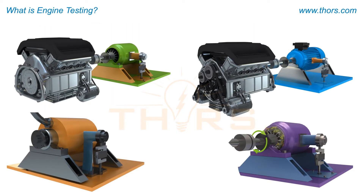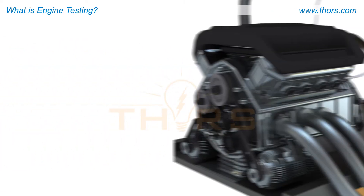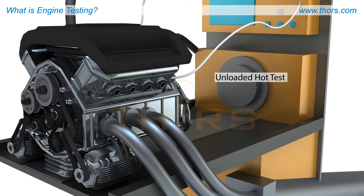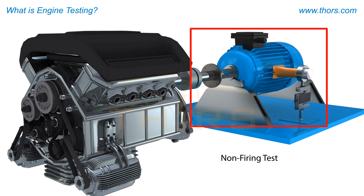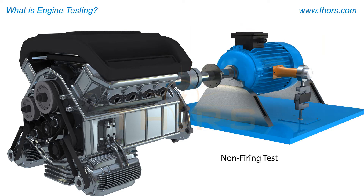Each of these mechanical devices measure the torque and power output of an engine. An unloaded hot test includes measuring the engine components by means of running the engine without the use of a dynamometer. The other type of method includes a non-firing test, which involves spinning the engine by means of an electric motor. As the name implies, non-firing, this type of engine method does not use any fuel or cause any sort of combustion.